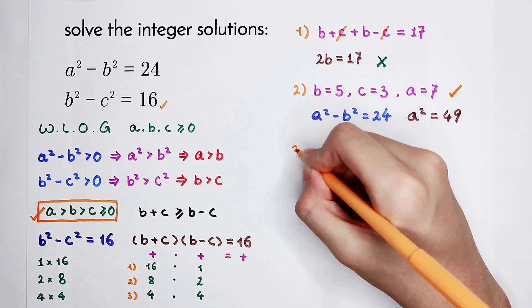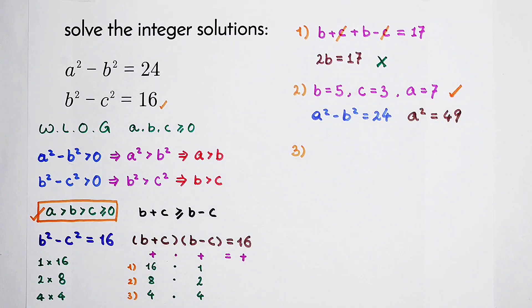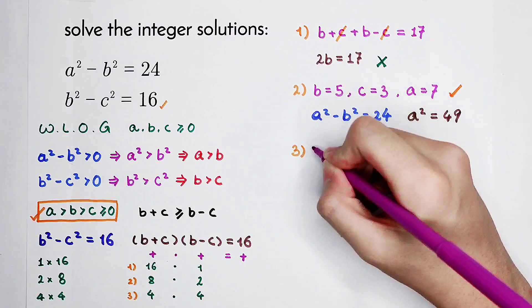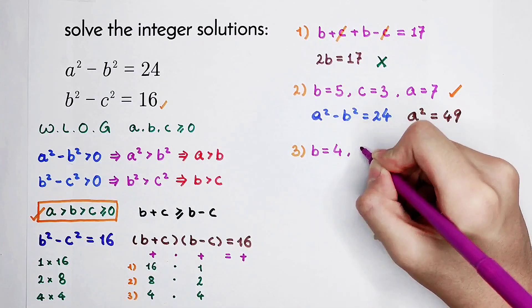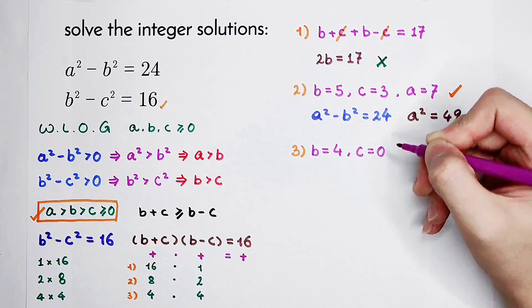For the third case, 2b equals 8, and b equals 4. In this case, c equals 0.